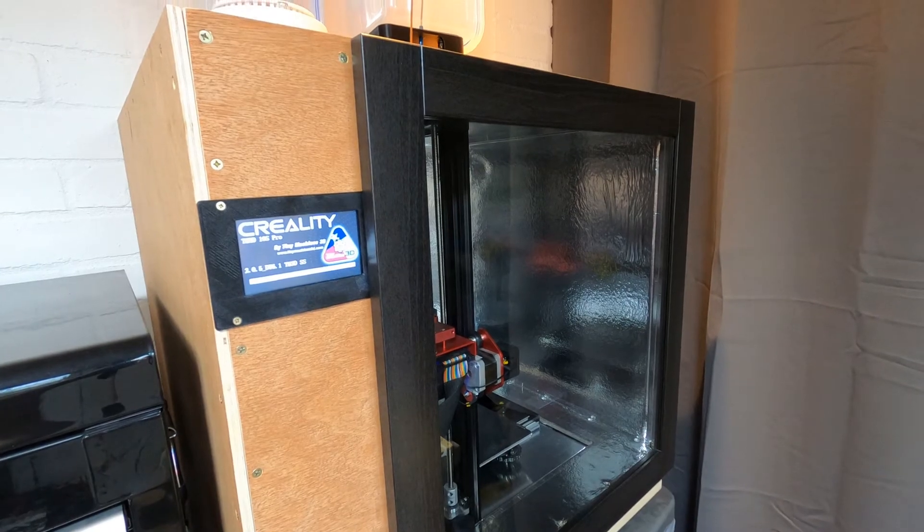In future videos, I'm going to be returning to the wiring with hopefully some kind of switch panel on the left hand side here. But for now, I just control everything with a switched extension lead so I can turn the printer and LEDs on and off separately.